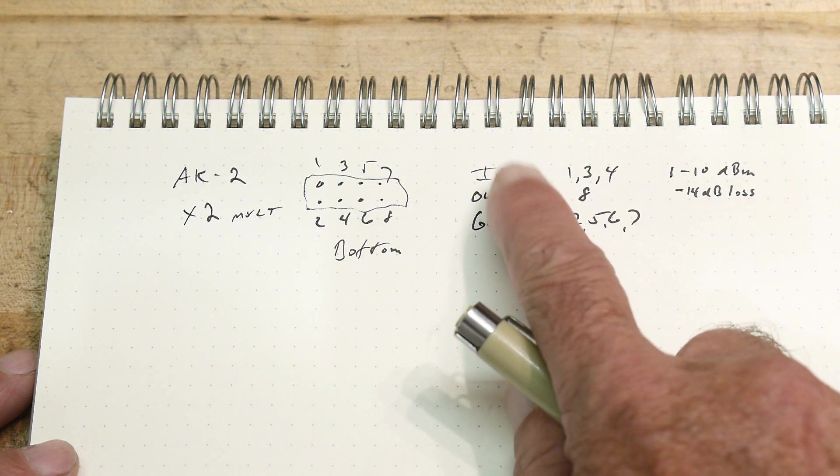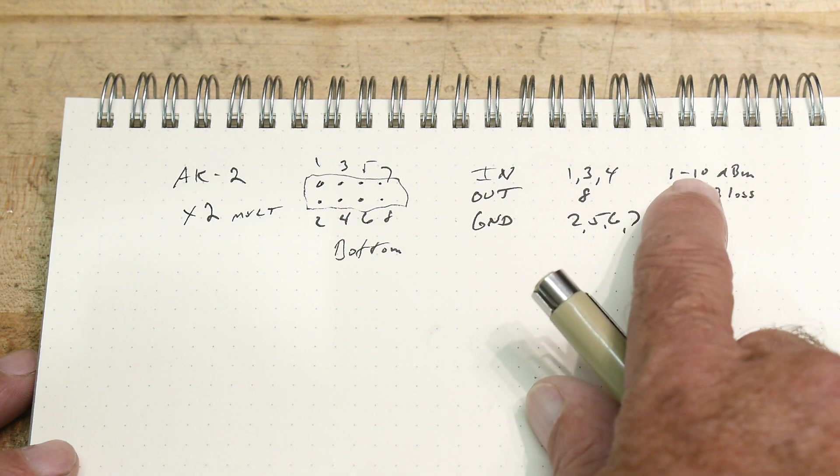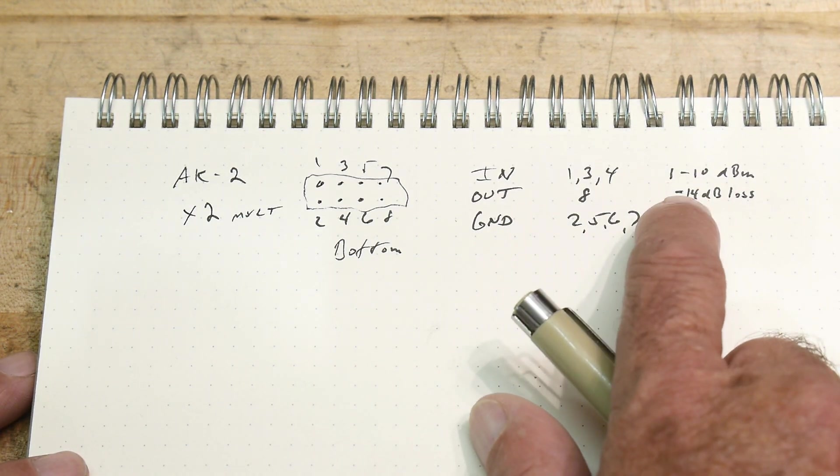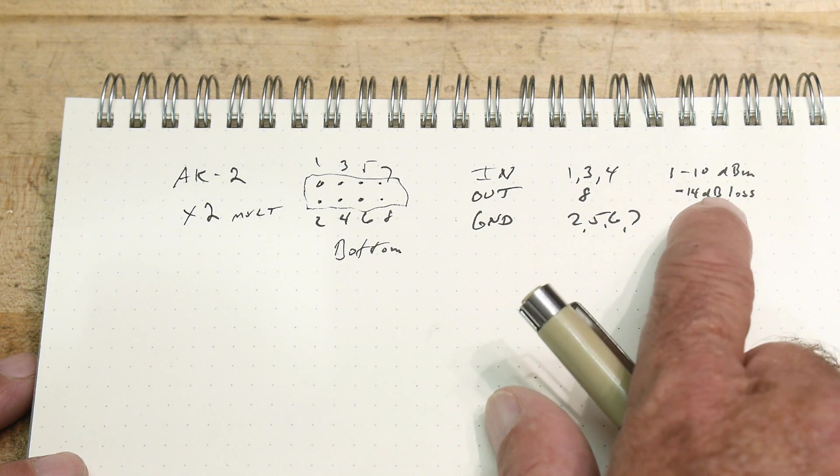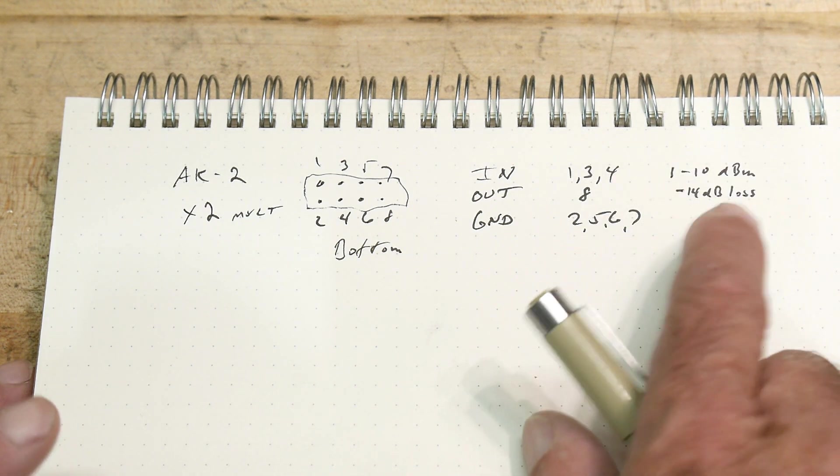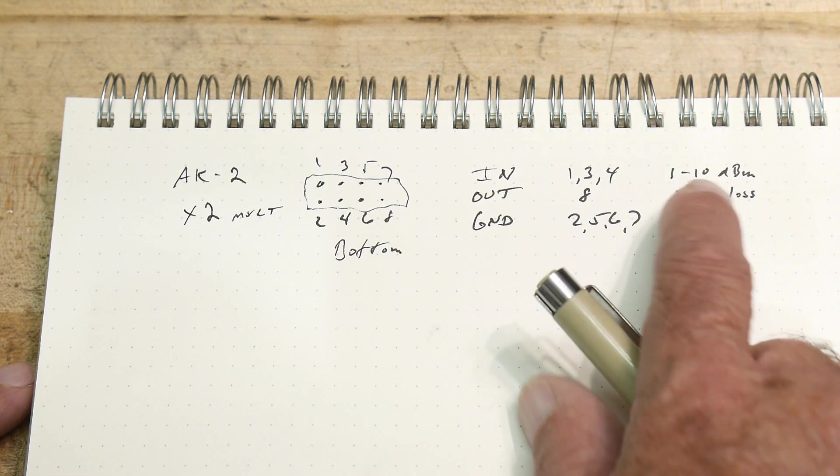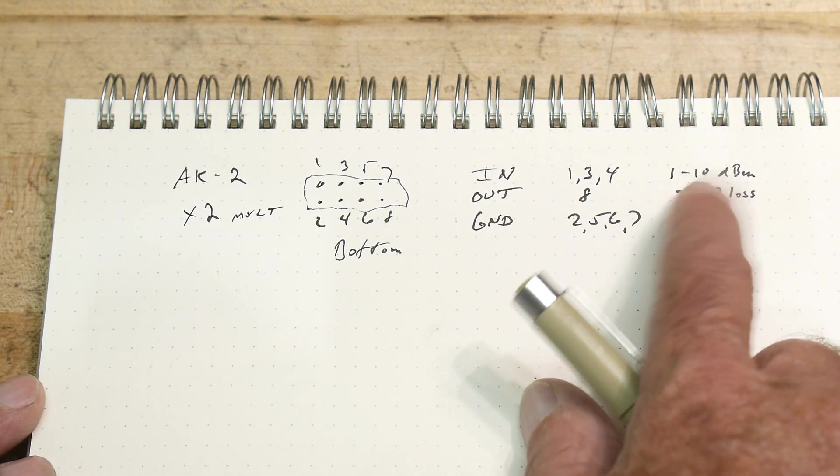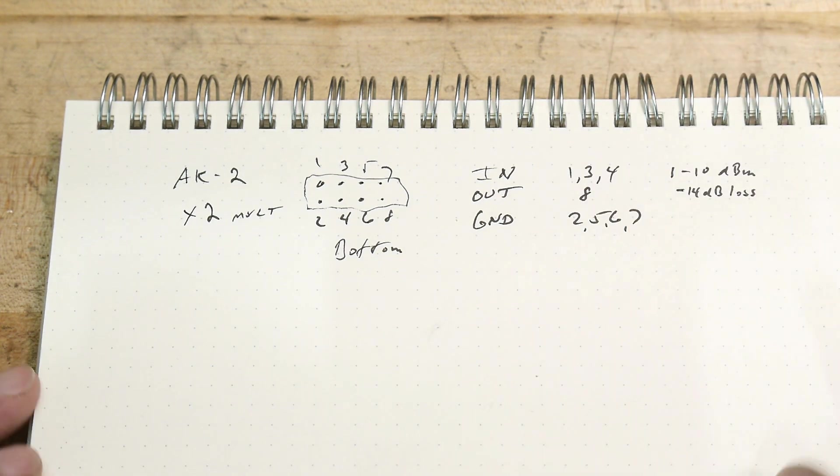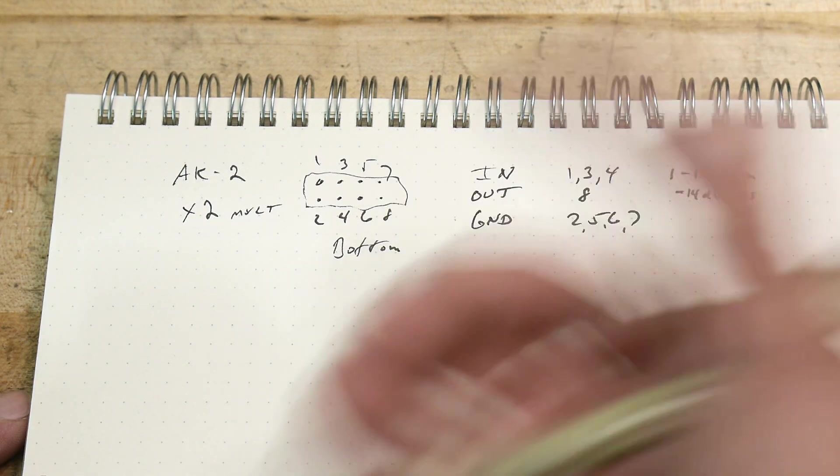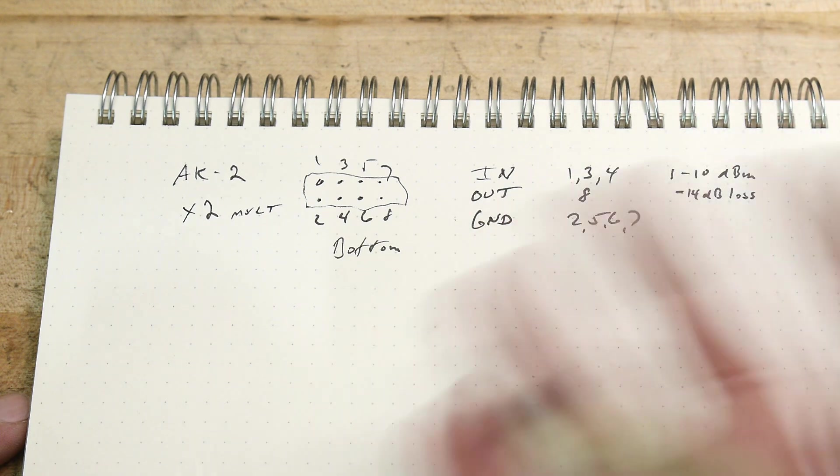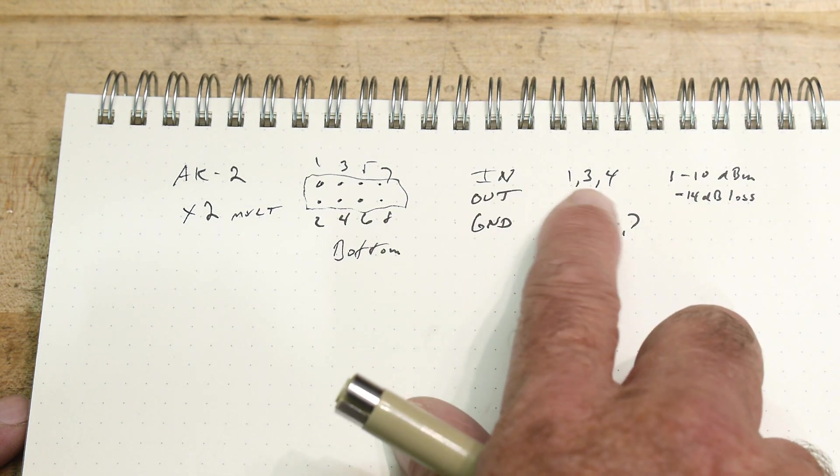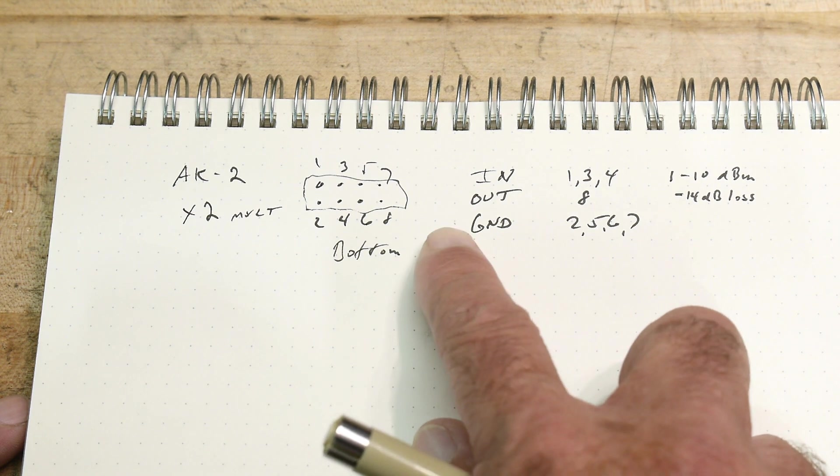And you need a fairly healthy input. It operates between plus 1 and plus 10 dBm, so the input has to be fairly high. And then there's some kind of, it was confusing about how much power you get out of this thing. One says 14 dB loss, but another thing said minus 30. So yeah, I'm not quite sure about what comes out of these things. But let's give it a try. I think it will do anything from like 1 to a gigahertz, 1 megahertz to a gigahertz. That's something like that. So yeah, it's kind of weird.